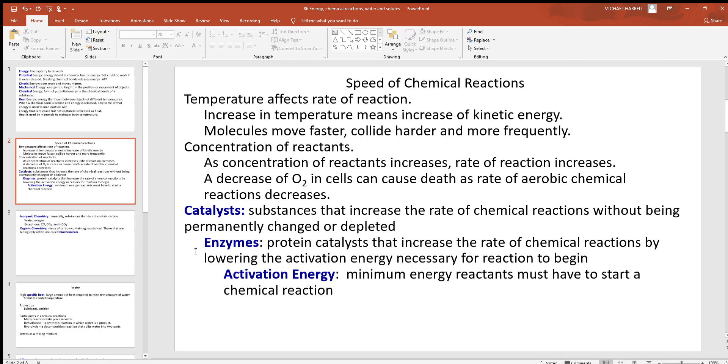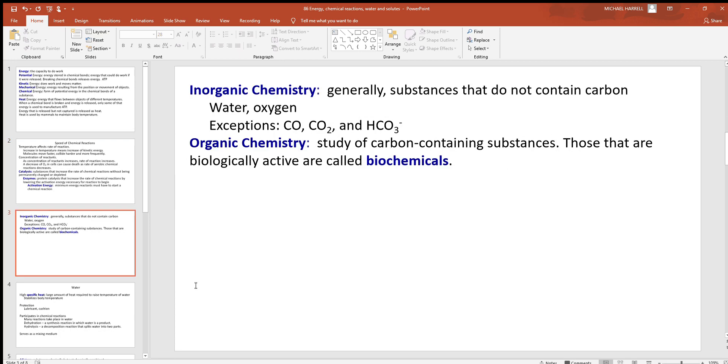Enzymes are a protein catalyst. They increase the rate of chemical reactions by lowering activation energy necessary for it all to begin. These enzymes are important. They make it where you only have to put in a tiny amount of energy and that way you can get a lot more out. Without these enzymes lowering that activation energy, you'd have to put so much energy into the reaction to get it started, you wouldn't get enough out of it to matter. Activation energy is the minimum energy reactants must have to start a chemical reaction.